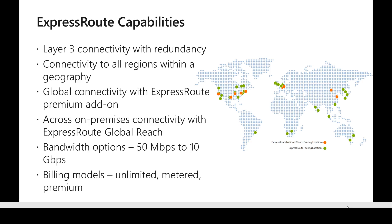There are two different connectivity modes possible with ExpressRoute: private peering and Microsoft peering. Private peering works by connecting the customer's on-premises workloads to workloads in an Azure virtual network — providing end-to-end private connectivity from private on-premises services to Azure private services within a virtual network.